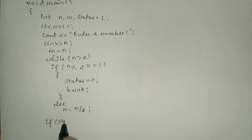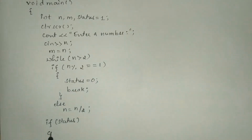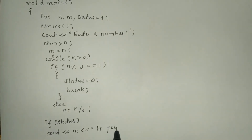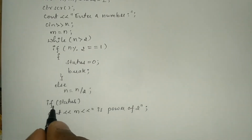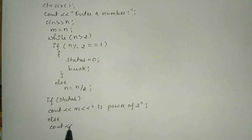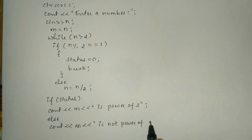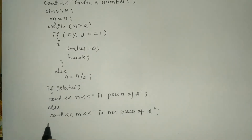Now we will check the condition: if status — meaning if status is equal to 1. If it is true, then it executes cout m followed by "is power of 2" in double quotation marks with a semicolon. If the status is set to 0 then this statement will not execute, and the else part will execute: cout m followed by "is not power of 2" in double quotation marks with a semicolon. Here I will write the getch() function and the curly closing brace.